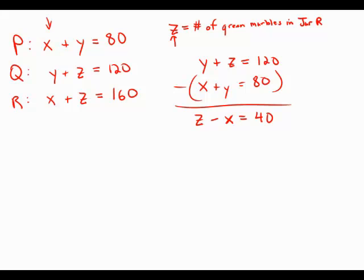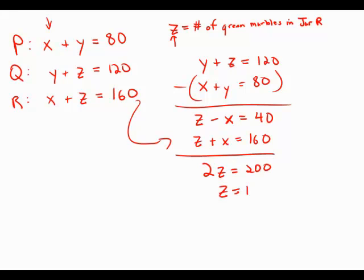And now I'm going to add this to the third equation. I'm just going to write that in the form of z plus x equals 160. So now the x's cancel. I get 2z equals 200, z equals 100, and this is the answer choice we seek. This is answer choice D.